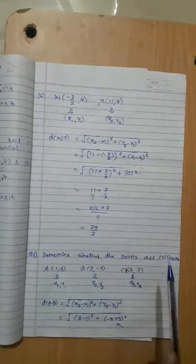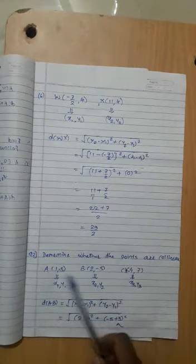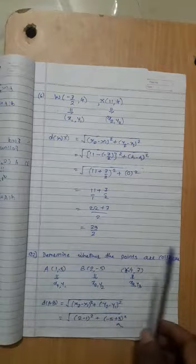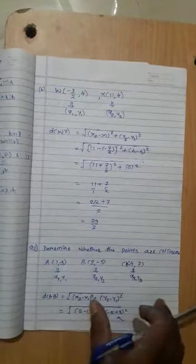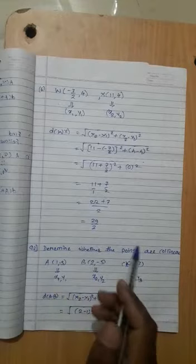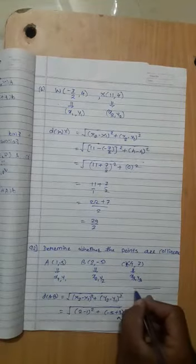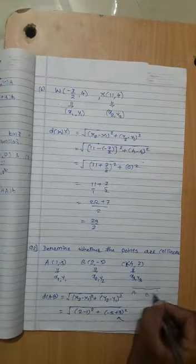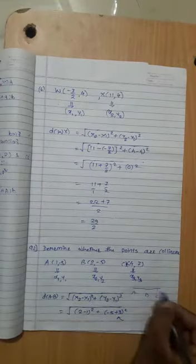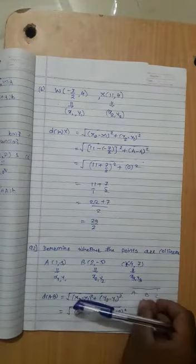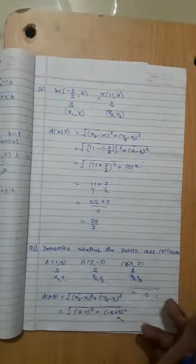Now determine whether the points are collinear. Three points are collinear if they lie on the same line. To check this, suppose we have points A, B, C. If AB plus BC equals AC, then they are collinear. It could also be AC plus BC equals AB.